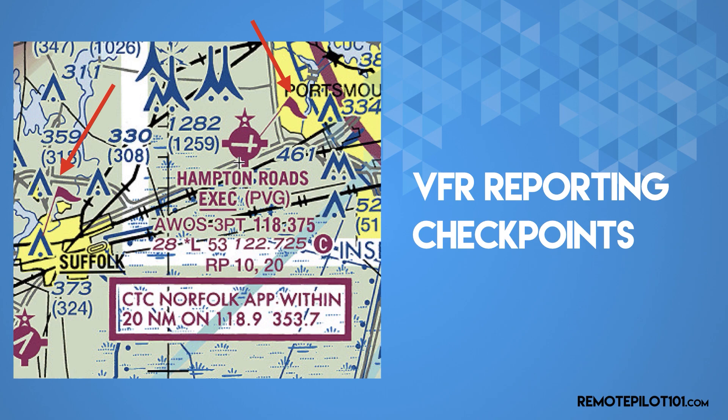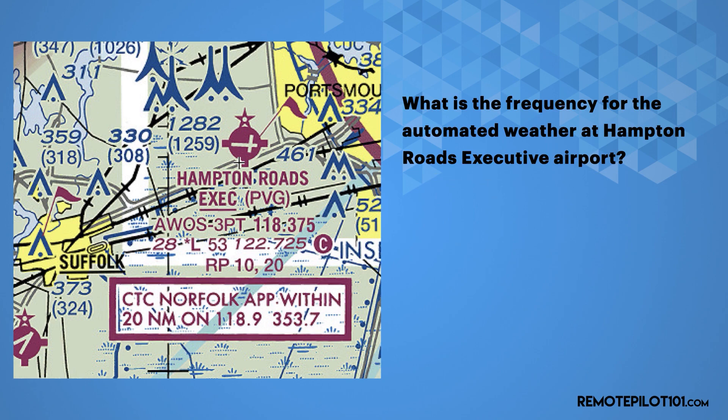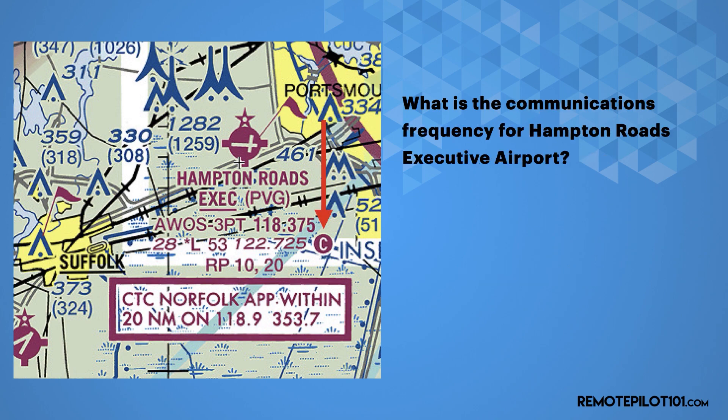You may be asked what frequency is the automated weather at Hampton Roads Executive Airport. We reference Figure 20 from the Knowledge Test Supplement. The acronym AWOS stands for Automated Weather Observation System — the frequency is 118.375. For the communications frequency, you look for the letter C in the circle — in this case it's 122.975. As a remote pilot, it's super unlikely you'll be making any radio calls at the airport unless it's part of an authorization or waiver. But if you did, it would sound like: such and such airport, drone 1234, operating a half mile west of the airport, below 400 feet. Most of the time, we use communication frequencies to monitor other traffic and check weather on the automated weather frequency.